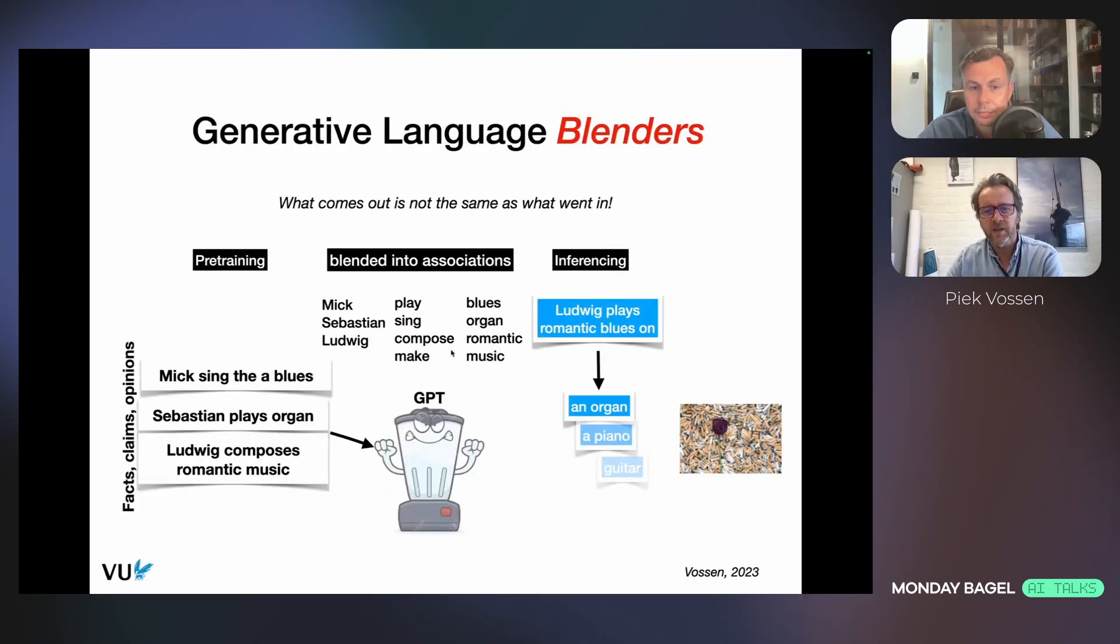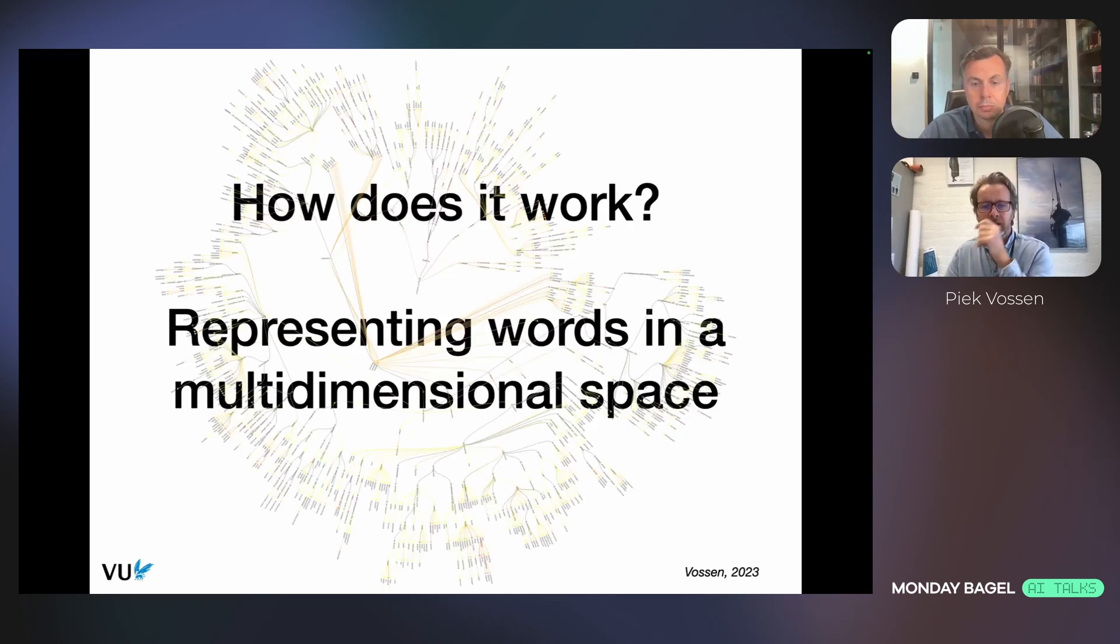The hallucinations come from these blended associations. Anything can be created by the model by prompting it in a certain way. If you ask it for very rare things, it's very likely to hallucinate because the association is weak and it can come up with any kind of association. To know how this actually works, you have to really look at the way in which these words and texts are represented.